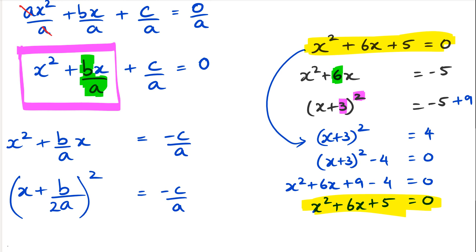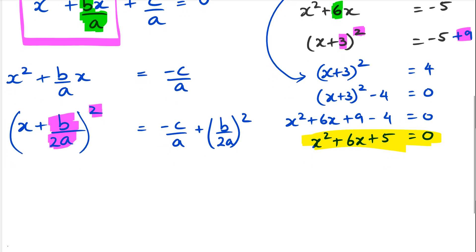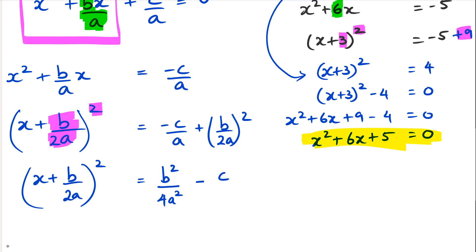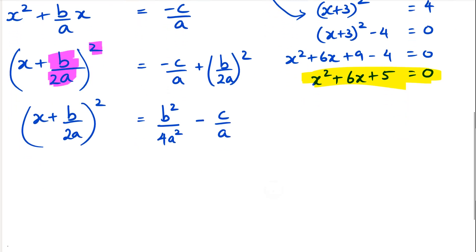Just like in the numeric example where we had to add 9 (which was 3²), here we have to add (b/(2a))² to the right-hand side. That gives us (x + b/(2a))² = −c/a + b²/(4a²). Rearranging, b²/(2a)² becomes b²/(4a²), so we have (x + b/(2a))² = b²/(4a²) − c/a.